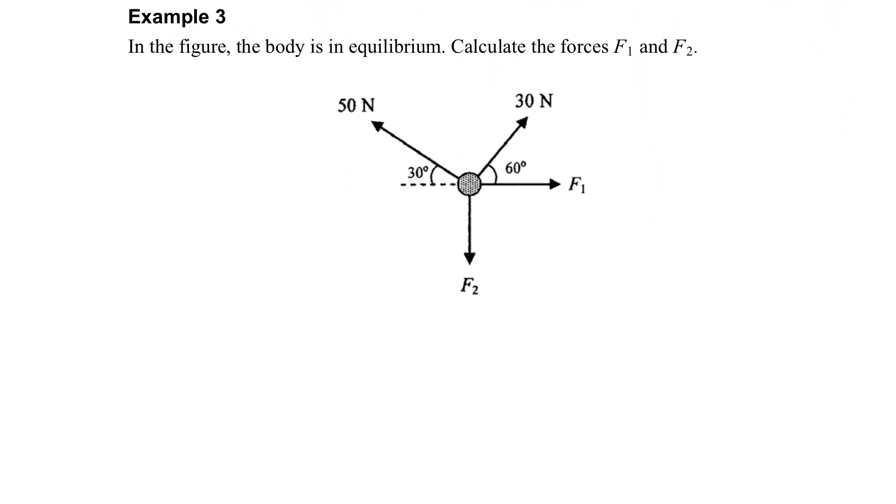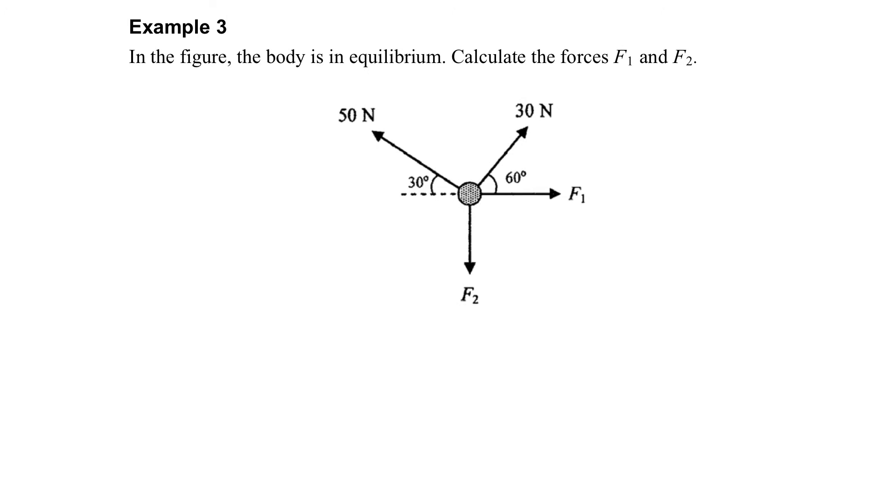So here's another example. The question states that this body is in equilibrium. That means all the forces are balanced. But the issue is, the two forces have that angle, rather than horizontal and vertical. So what can we do?